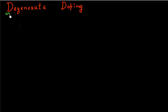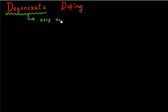I want to explore the concept of degenerate doping in this video. Degenerate doping is a fancy term for very, very high doping. Let's first see what happens if you increase the doping in your semiconductor.